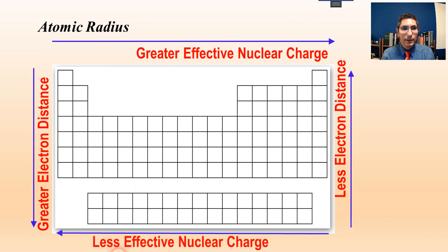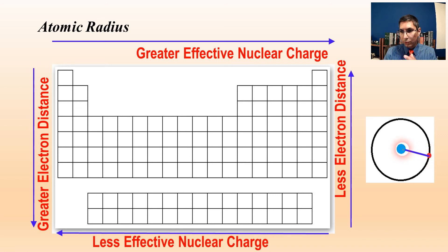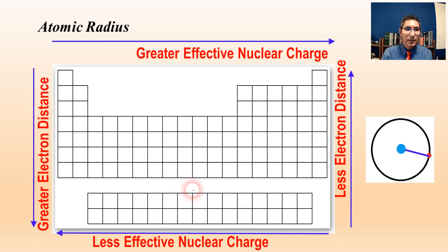So let's take a look at how this affects atomic radius. When I say atomic radius, I'm talking about something like this here. We have an atom and there's the nucleus right here, and the average distance between the nucleus and the outermost part of the electron cloud is the atomic radius. So if we use these trends, we can predict if an atom is going to be larger or smaller than another one.